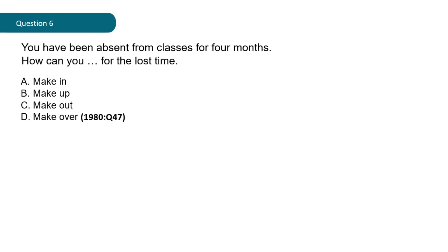Question six: 'You have been absent from classes for four months. How can you dash for the lost time?' A: how can you make in, B: how can you make up, C: how can you make out, D: how can you make over? This is question 47 of the 1980 past question. Give it a try.